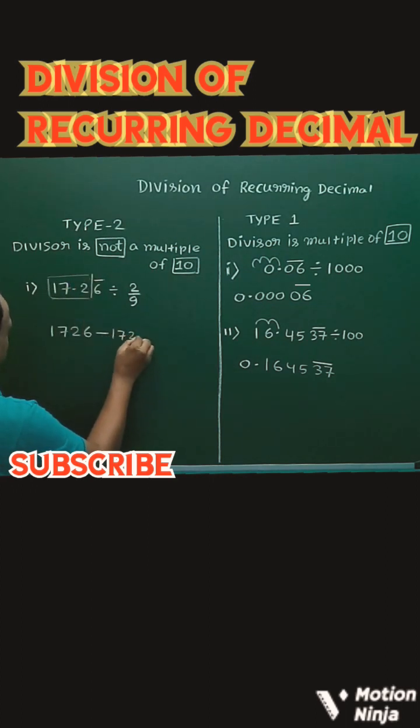I will subtract 172 by how many digits have the bar—single digit—so here I will write 9 one time. After the decimal and before the digit having the bar, how many places are there without bar? That is only one place, so I will write here a single zero.